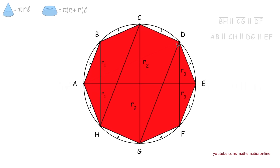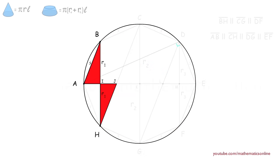Now as we can see, the polygon is made up of different sized triangles. Before we can find the surface area, we must first establish an important relationship between these triangles. We label the intersection points in the middle and look at triangles ABI and HIJ. The vertical angles formed by both triangles are equal, and since line AB is parallel to line CH, the alternate interior angles are equal. Since both triangles have side R1 in common, then by the angle-side-angle theorem, both triangles are congruent. Therefore, all the corresponding angles are equal, and if we call this side of the triangle D1, then the corresponding side of the other triangle must also be D1.